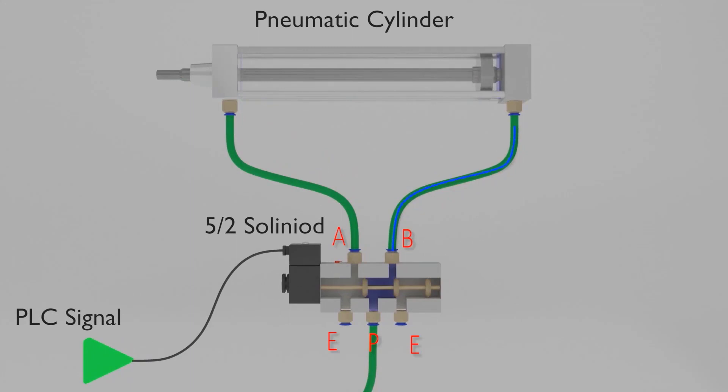Cylinder shaft moves forward and gets fully extended outwards. Any existing air in the port A gets exhausted into the atmosphere as now port A is linked with exhaust port.